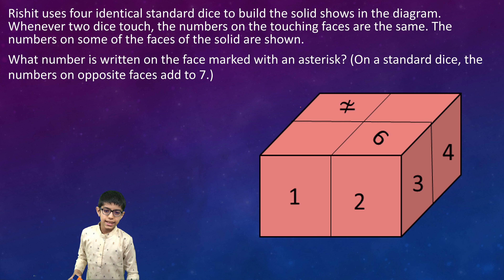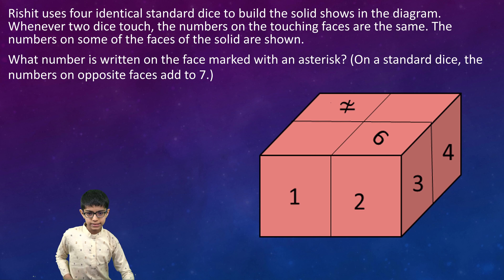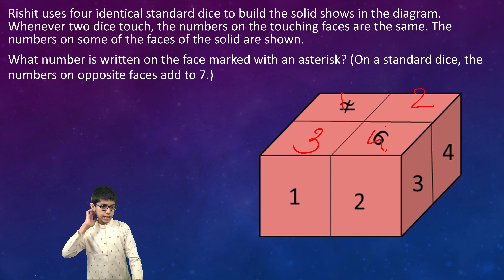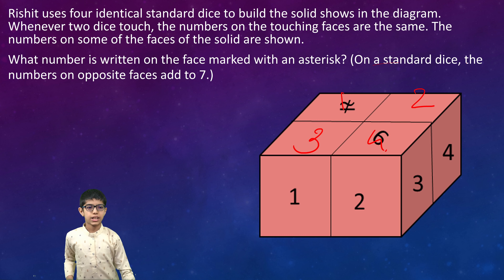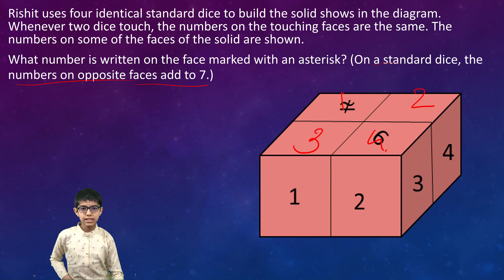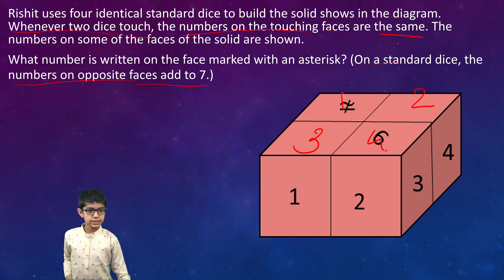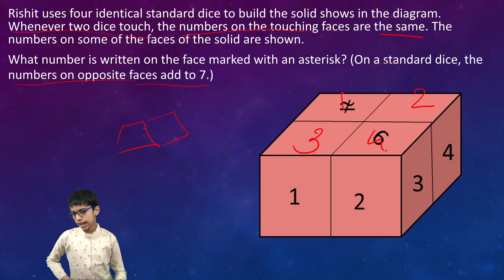Here we have four dice — the first, the second, the third, and the fourth. On a standard dice, the numbers on opposite faces add to seven. There is one more rule: whenever two dice touch, the numbers on the touching faces are the same. For example, if the first dice has four on its touching face, then the adjacent dice would also have four.